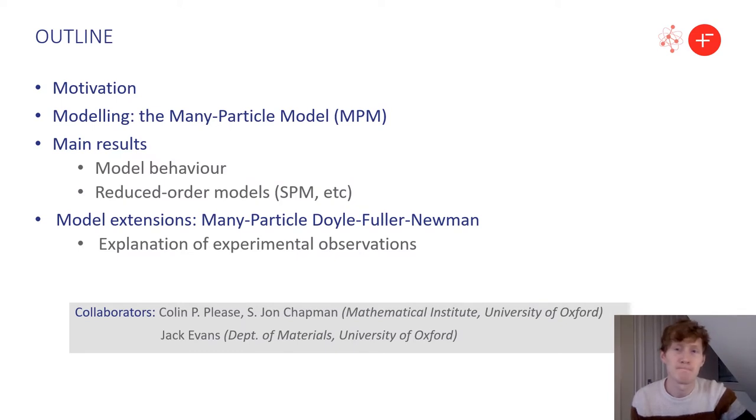First, the structure of this presentation. Beginning with the motivation and what I mean by heterogeneity, that is particle size distributions, I'll then describe how we modelled it with the so-called many particle model. I'll go over the main results, which includes the reduction to single particle models, and finish with a mention of the model extension and an experimental phenomenon it can explain. This is work supervised by Colin Pleas and John Chapman and Jack Evans, all at the University of Oxford.